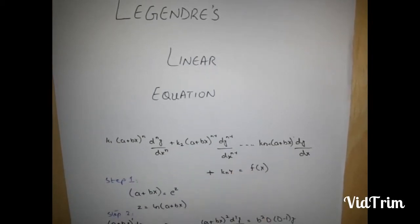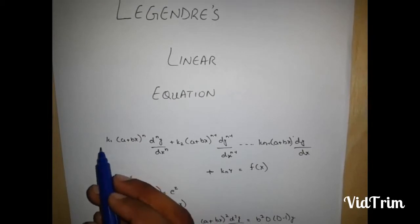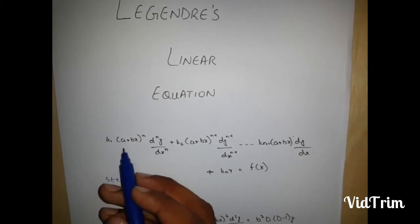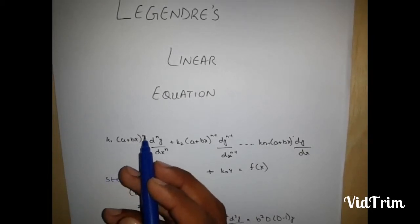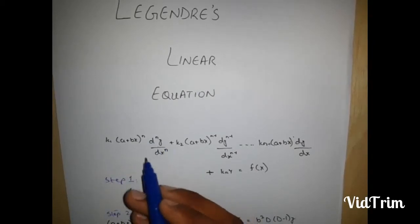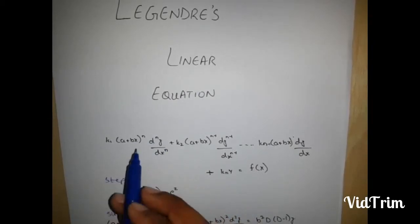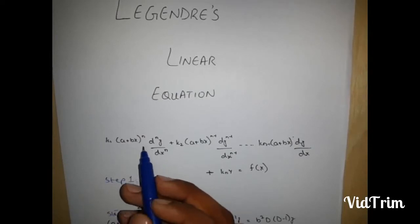What is Legendre's linear equation? If you have an equation like this, where k is a constant a plus bx to the power n dy upon dx to the power n, here power of both are same.